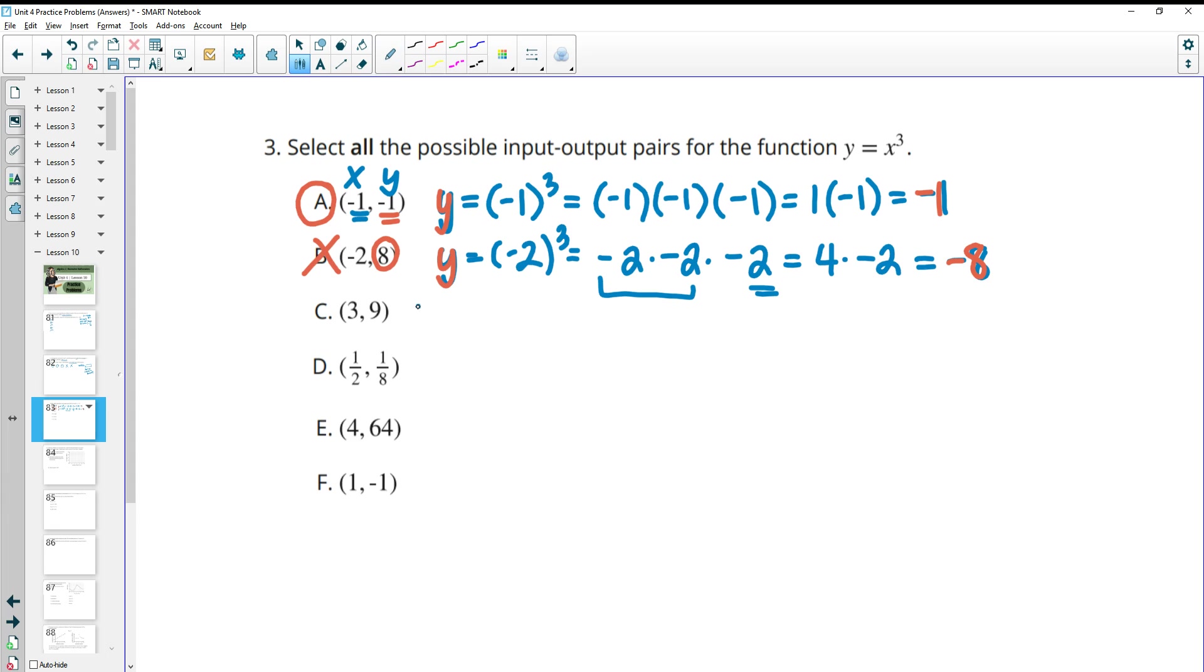Number three, or sorry, part C, we're plugging in 3. So 3 cubed. So this is going to be 3 times 3 times 3. Well, 3 times 3 is 9 times 3 is 27. That's not what they gave us here. So 3 cubed is 27, not 9.